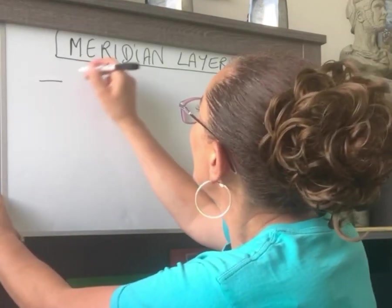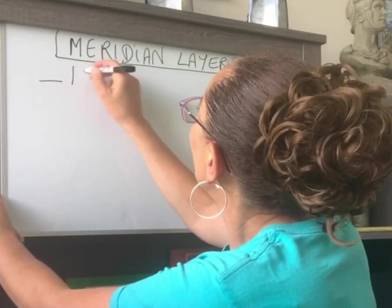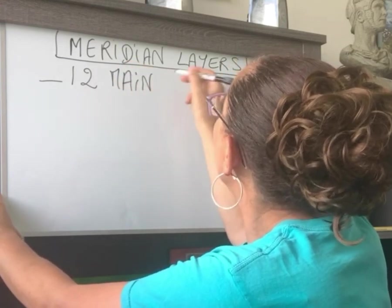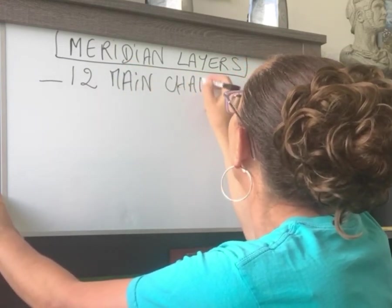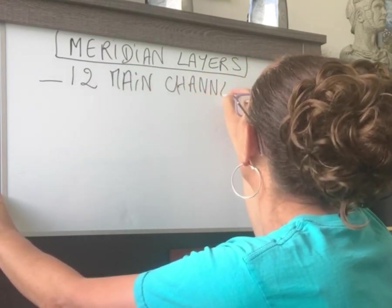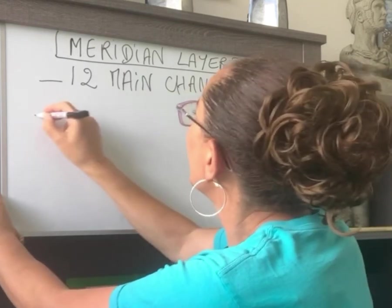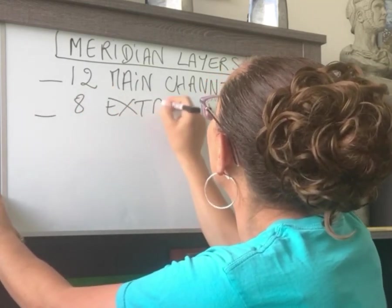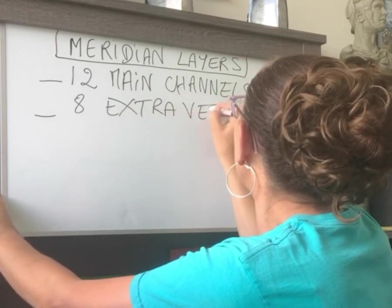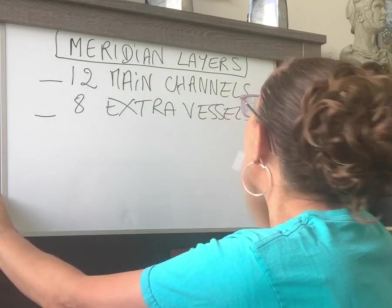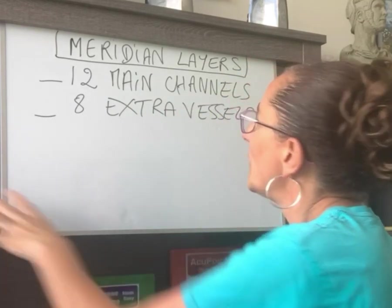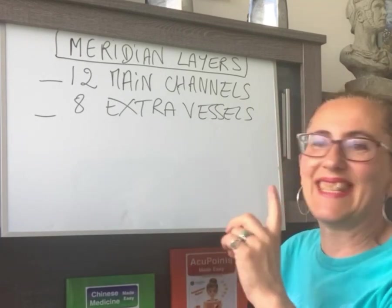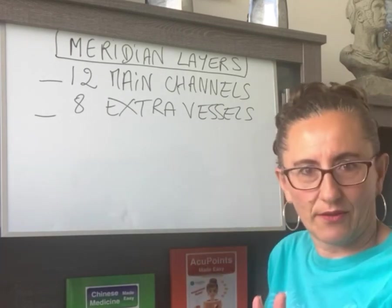If we look at the layers of the meridian, the deepest meridians are the 12 main meridians or channels — whatever you want to call them, it's a translation difference. And the eight extra vessels. So those are the deepest meridians or channels in the body: the 12 regular meridians and the eight extra vessels.